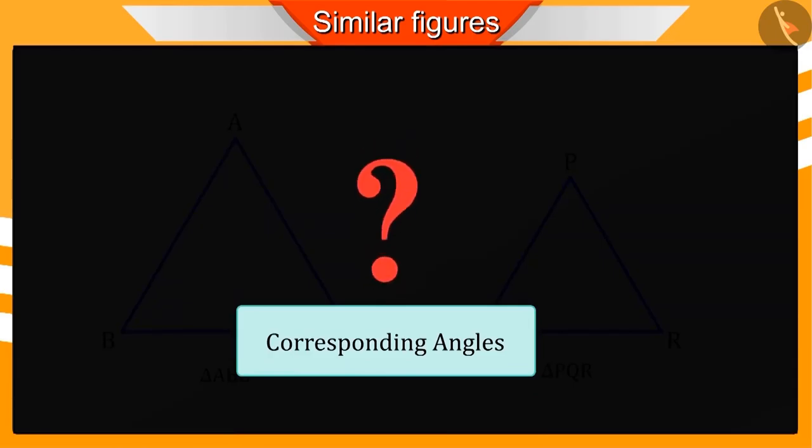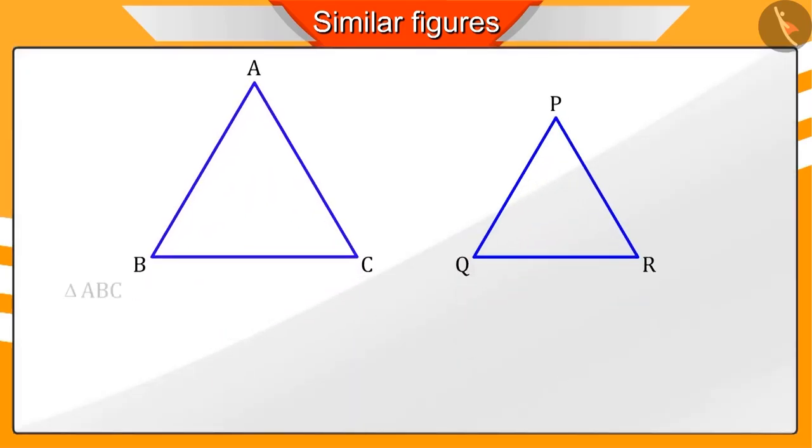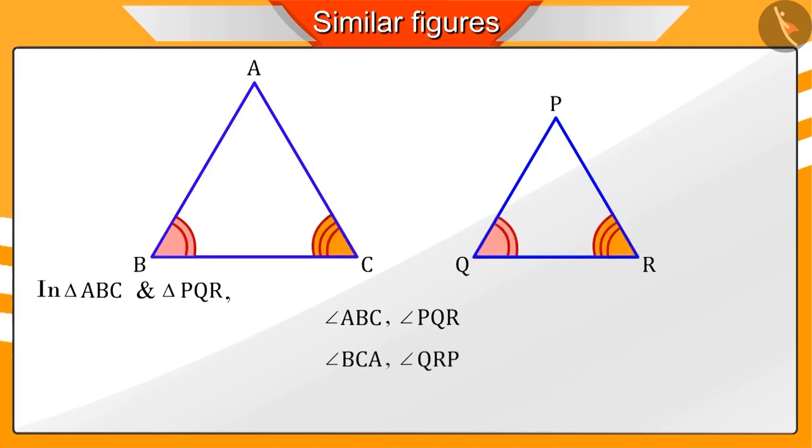Can you name the corresponding angles of these triangles? Absolutely correct. Here, angles ABC and PQR, angles BCA and QRP, and angles CAB and RPQ are the corresponding angles.